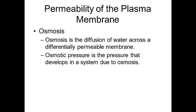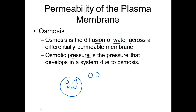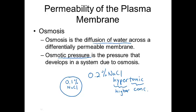Osmosis is the same process except it deals specifically with water — it's the diffusion of water. Osmotic pressure refers to the pressure that develops as a result of osmosis. For example, if a cell has a salt concentration of 0.1% and outside the cell there's a salt concentration of 0.2%, the outside is called a hypertonic solution. Tonic refers to concentration, and hyper means higher.